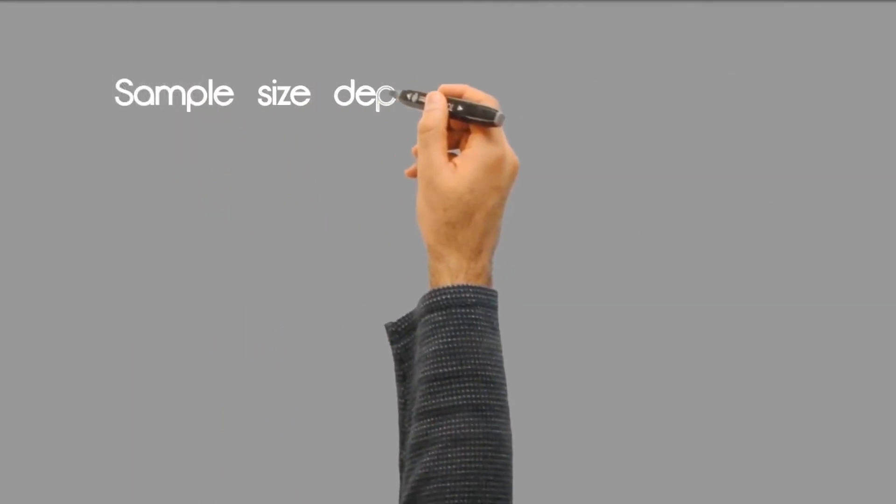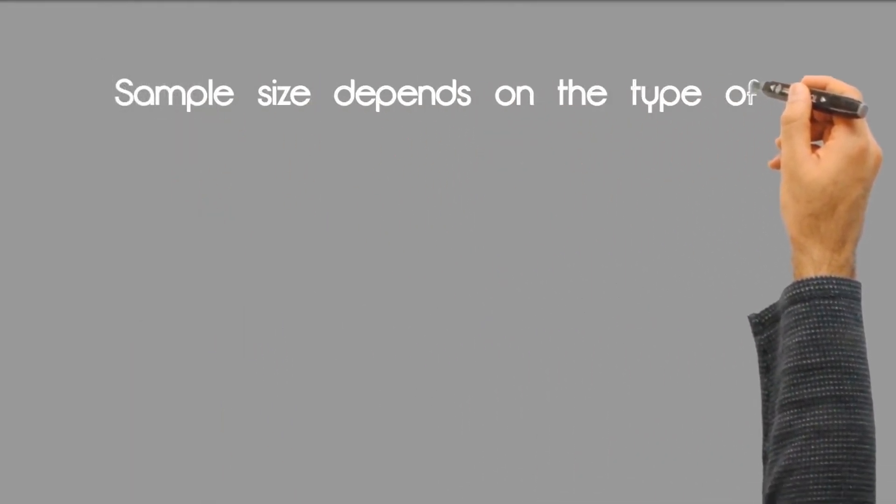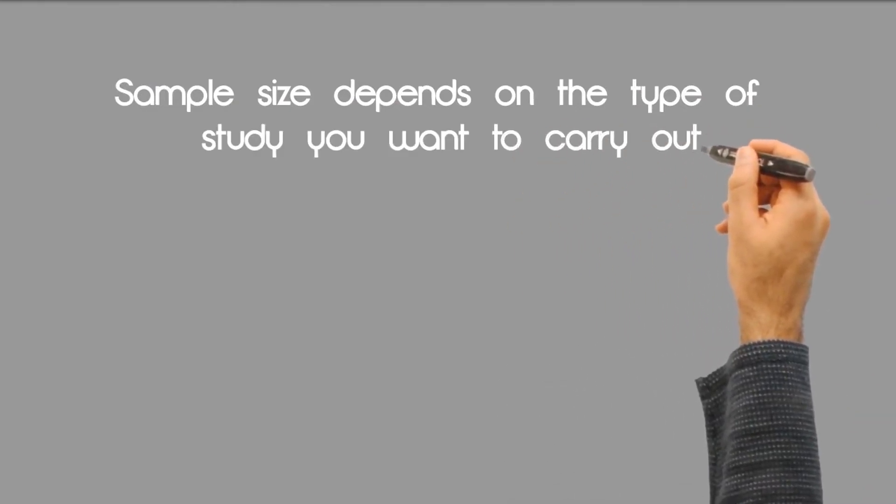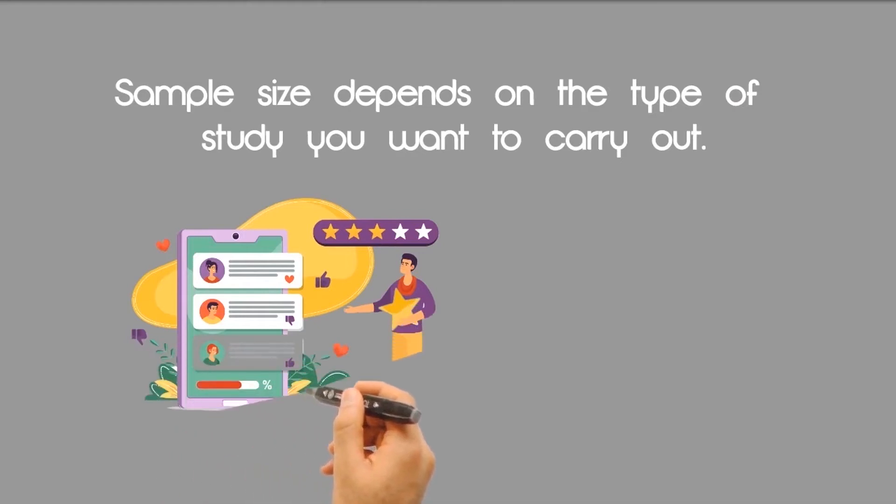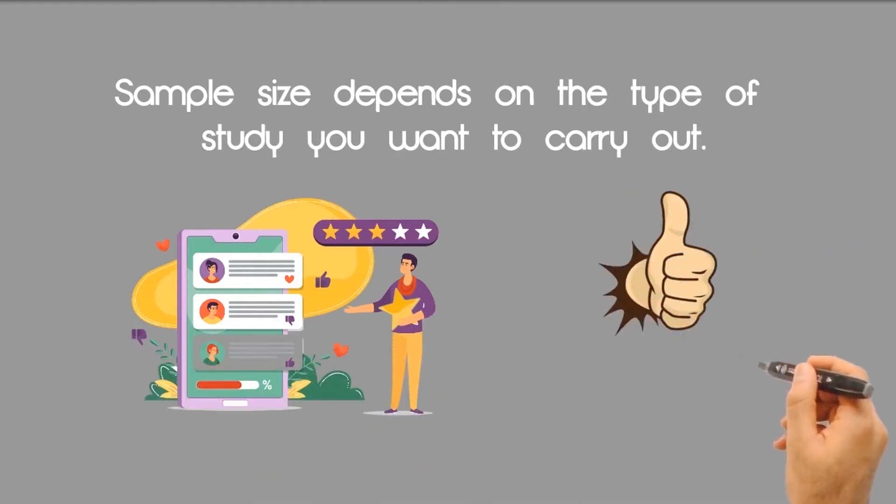Generally, it is important to note that sample size depends on the type of study you want to carry out. So if your survey involves customer feedback assessment or tourist exit assessment, and you want to use a simple random sampling method, then the rule of thumb is minimum is 100 and the maximum is 1000.